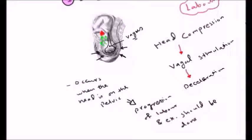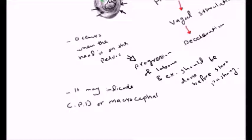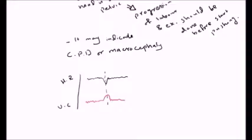However, examination should be done before starting pushing, because early deceleration may also be an indicator of cephalopelvic disproportion or macrocephaly. On CTG, whenever there is a uterine contraction there will be a deceleration, with the peak of the fetal heart rate deceleration facing the peak of the uterine contraction on the paper. That's why they say it's a mirror image of the uterine contraction.